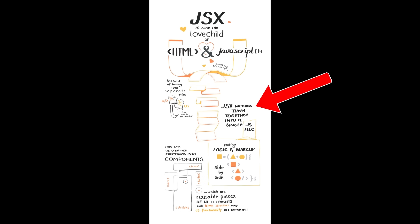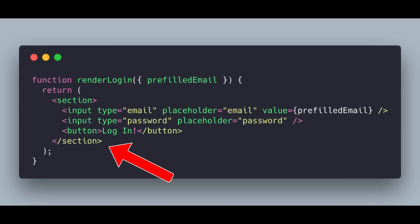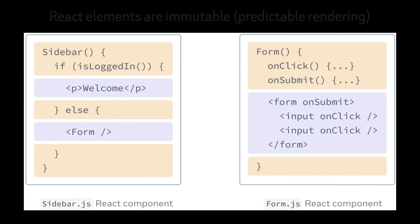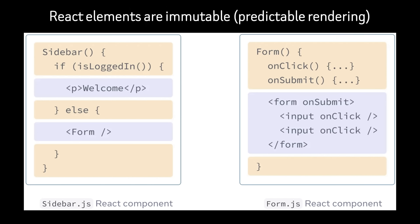Because JSX is effectively JavaScript, you can embed expressions directly inside it, which makes dynamic UI trivial to express. Importantly, JSX does not create DOM nodes — it creates React elements, which are immutable descriptions used later during reconciliation, which I'll touch on shortly.